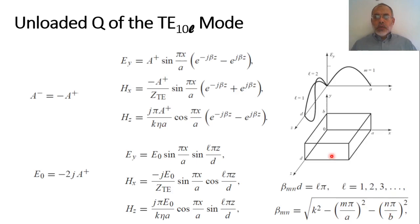Now we are going to discuss specifically the TE10L mode. This means that the value of M is 1, the value of N is 0, and L can be 1, 2, 3 or any other integer. In this video we are going to discuss the quality factor of the TE10L mode in a rectangular waveguide cavity.